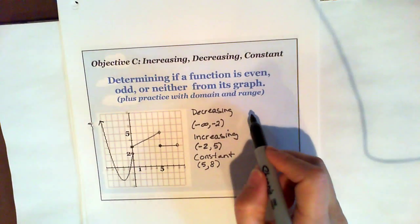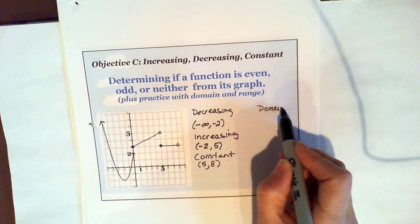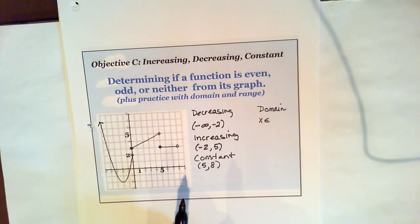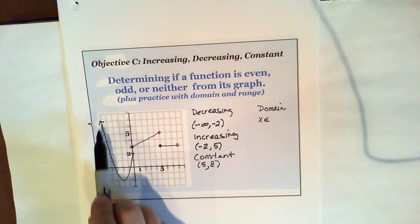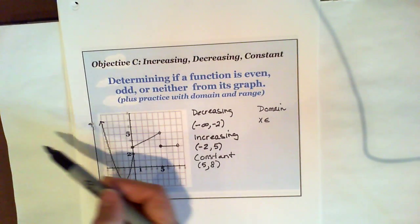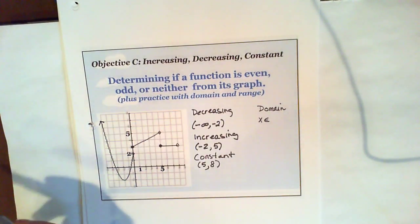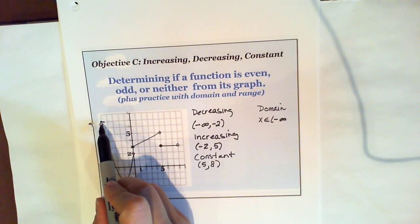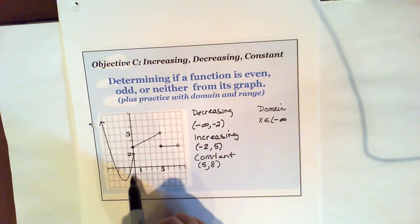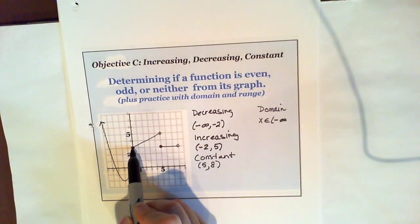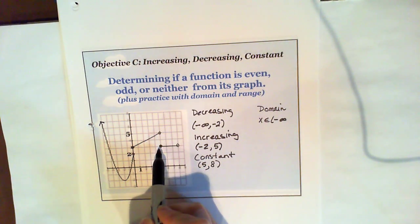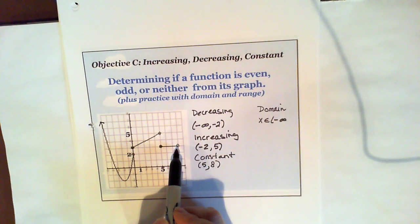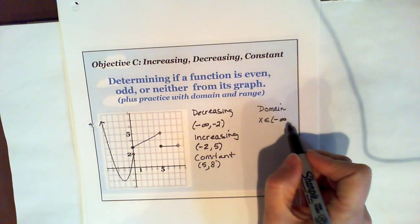Now if I wanted to talk about the domain — the domain is the x values. So I would say x such that. We have to consider the domain: how far left can I go, how far right can I go? Since there's an arrow pointing that way, the function goes on and on and on — so from negative infinity. And then how far right? I have to make sure there's no places where I skip. At zero there is a value — it's filled in here, just not down there. At five there is a value — it's down here, not up there. And at eight there is not a value. So it goes all the way until eight from left to right, but eight is not included.